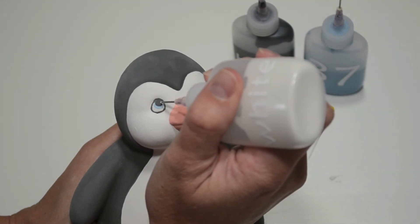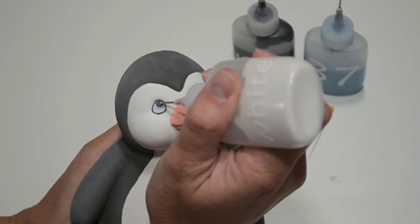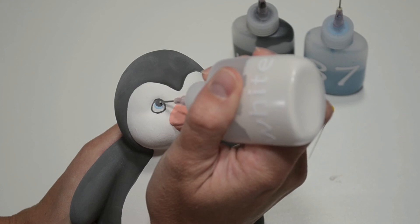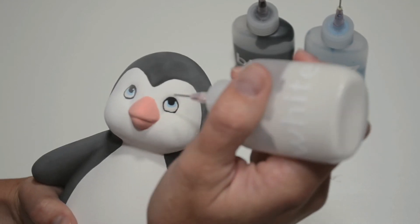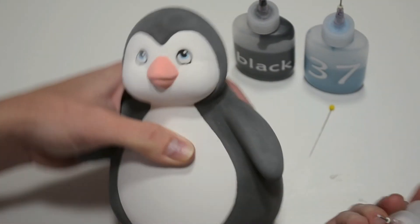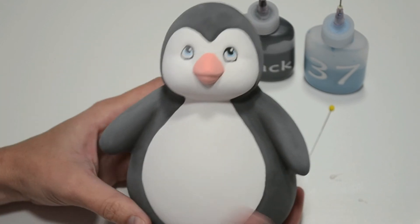I'm going to add a small white dot to the upper right corner of each eye. Use two coats of paint here since we are applying it on top of black. All done. Look at that cute little fella.